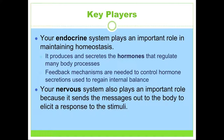The key players in homeostasis within our body are the endocrine system and the nervous system. The endocrine system produces hormones that regulate a lot of body processes, and feedback mechanisms are needed to control hormone secretions used to regain an internal balance. The nervous system plays a big role as well because it sends out messages to the body to elicit or begin a response to stimuli.